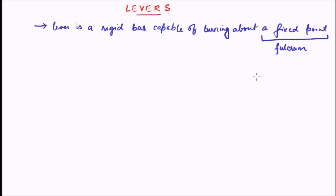What is a seesaw? It hinges about a central point. A child or a couple of children sit at one end, and to balance it out someone sits at the other end. So effectively there is a moment which tries to turn in one direction due to one child, which is countered by the moment due to the other child in the clockwise direction. This hinge location is called the fulcrum, denoted by F. So this seesaw is a classic example of a liver. Another example would be a pair of scissors or a tong.